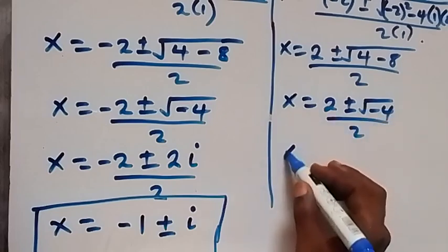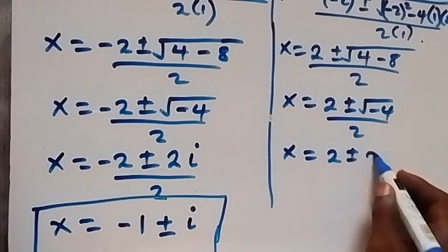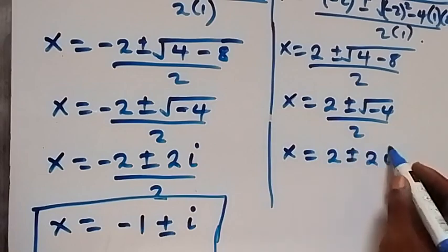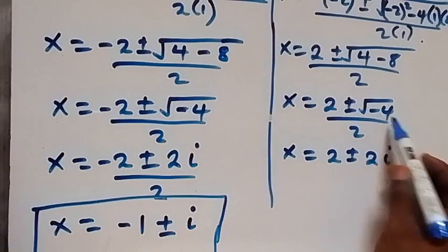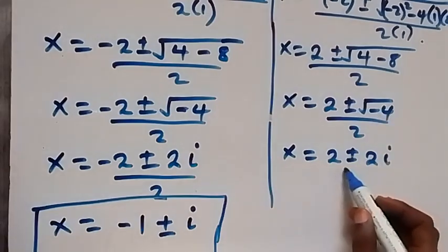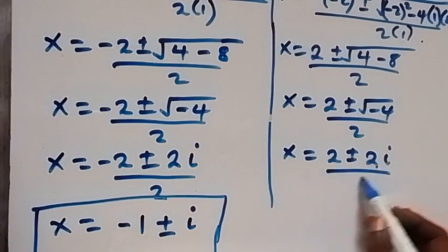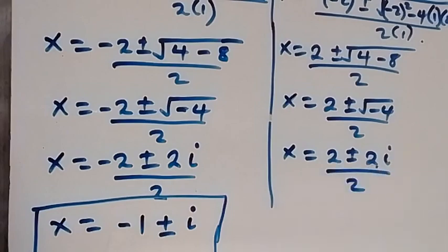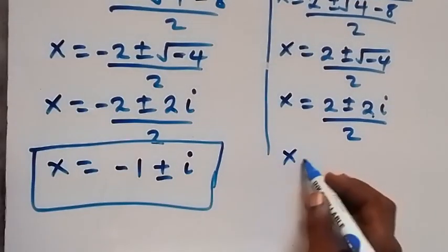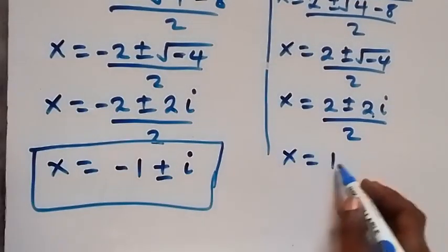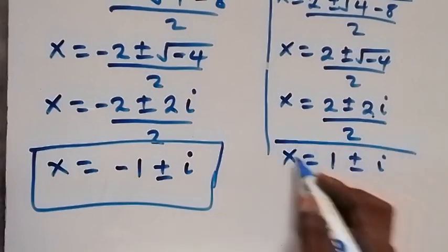So we have x = (2 ± 2i) over 2. Separating square root of 4 and square root of minus 1 gives 2i, over 2. This simplifies to x = 1 ± i.